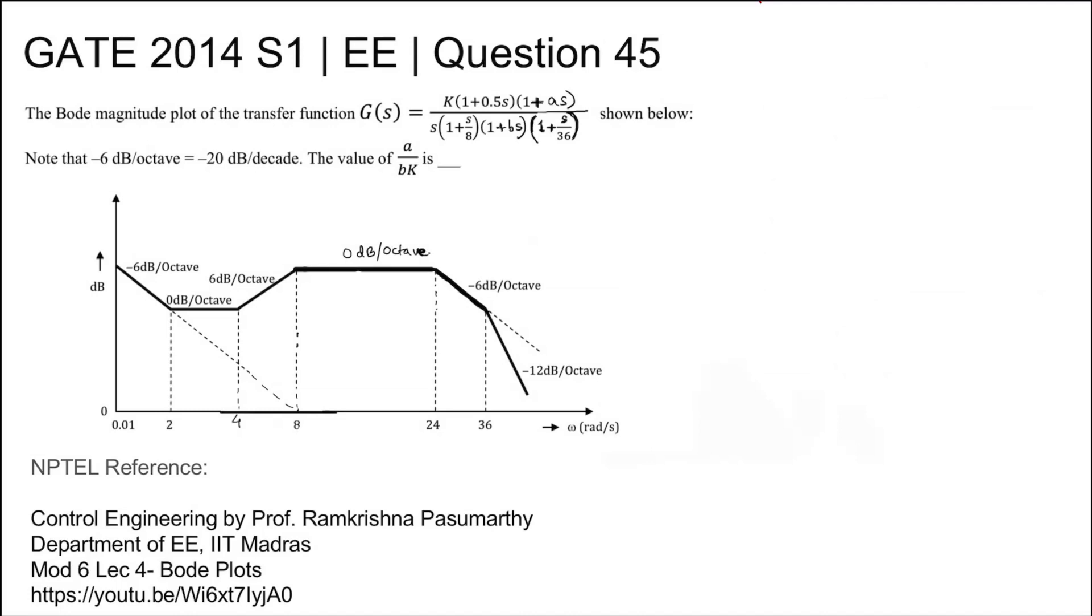Note that -6 dB per octave equals -20 dB per decade. The value of a/bk is being asked. This is the Bode plot shown. For NPTEL reference, you can refer to Module 6 Lecture 4 Bode Plots.